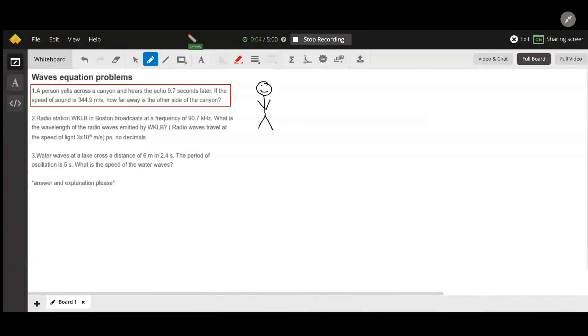Asking, if a person yells across a canyon and hears an echo 9.7 seconds later, if the speed is around 344.9 meters per second, how far is the other side of the canyon?